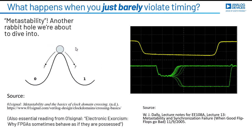What happens if we just barely violate the timing requirements of a flip-flop — just on the edge of clocking in a zero or a one? This is a typical metastable situation where the output might hang somewhere in the middle and eventually settle to a zero or a one. Here's a scope shot from a wonderful lecture by Dr. Daly at Stanford: a falling clock edge followed by a data transition that hangs in the middle, sometimes settling out to a one and sometimes to a zero. We'll do our own version of that in a second.